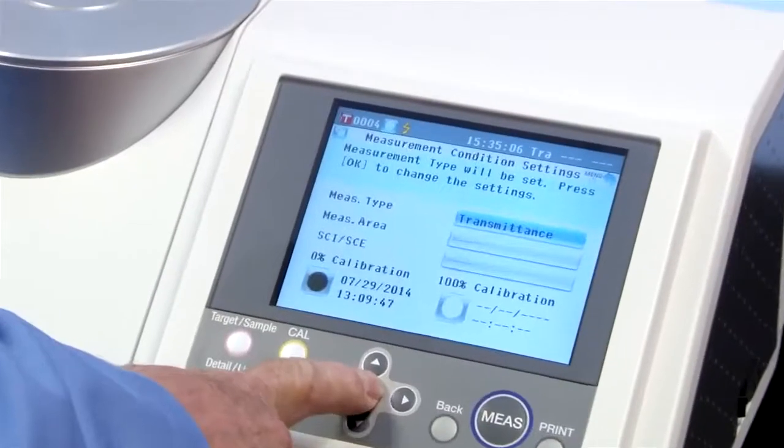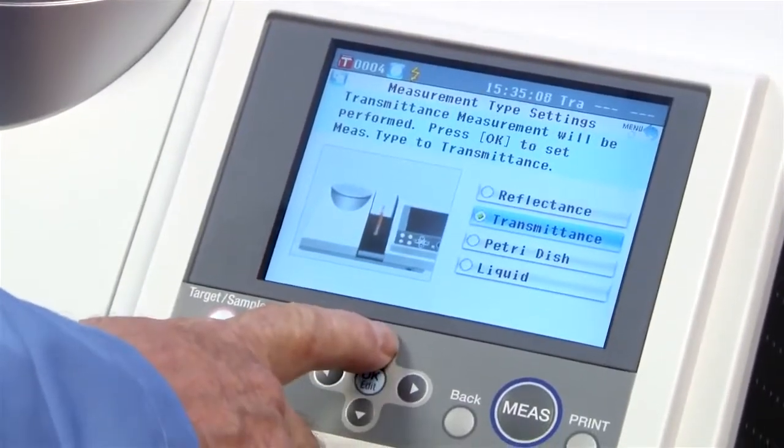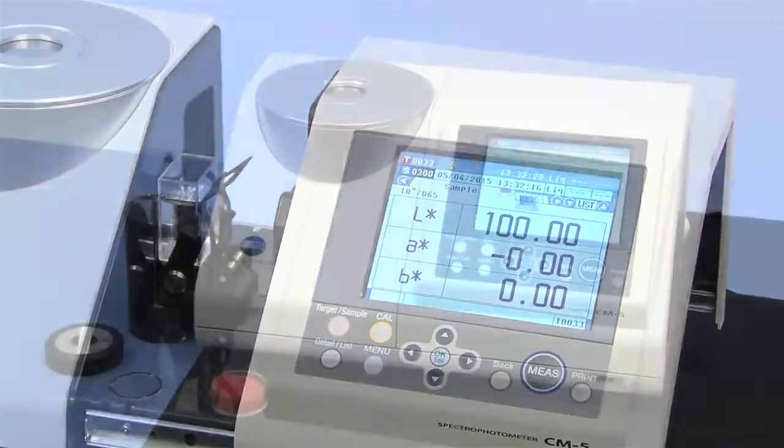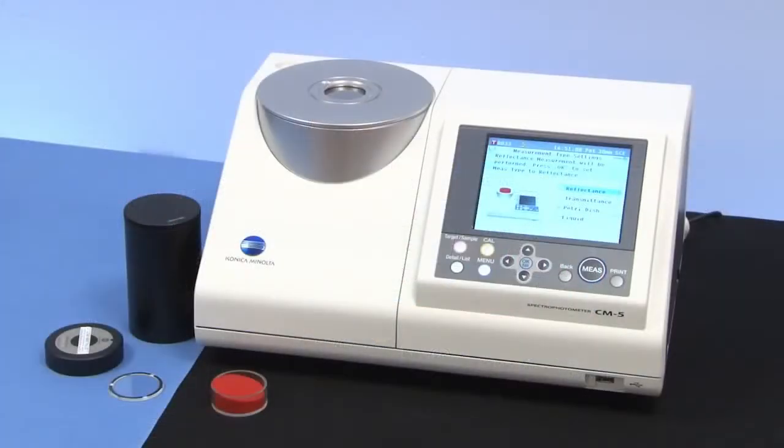Quickly switch various modes in reflectance or transmittance including petri dish and liquid. Configure the CM5 to your measurement requirements.